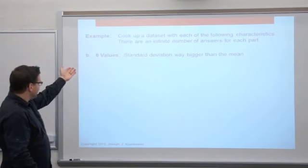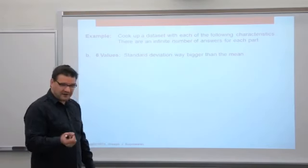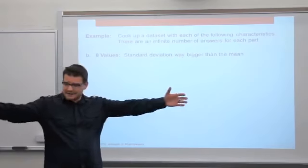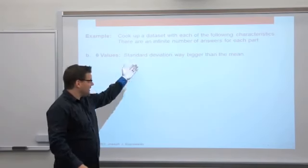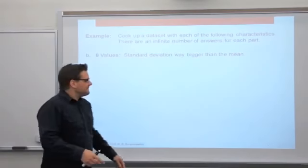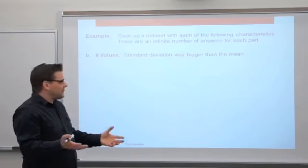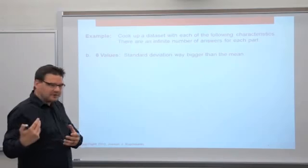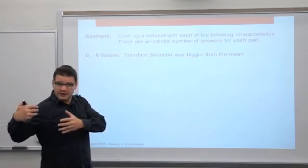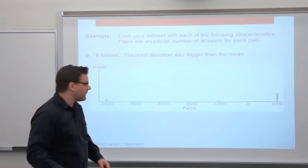Part B: come up with six values where the standard deviation is way bigger than the mean. I need lots of spread so the standard deviation is big, and somehow I need to get the mean to be a small number. One trick is to throw in a negative number. If you put a negative number in the data set, that will pull the mean down close to zero if you make the negative number big enough.